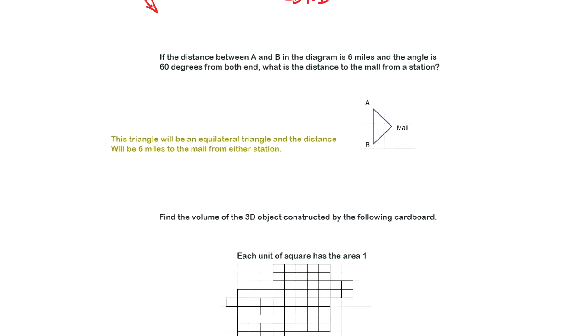Now, the distance between A and B in the diagram is 6 miles. And the angle is 60 degrees from both sides. What is the distance to the mole from the station? Well, assume station is A and B, both are stations. So they are same lengths. So if you divide this in half, then it's going to be 60 degrees, 30 degrees, and it's 3 miles. So distance is going to be 6 miles.